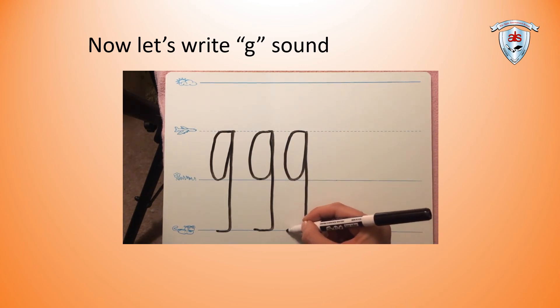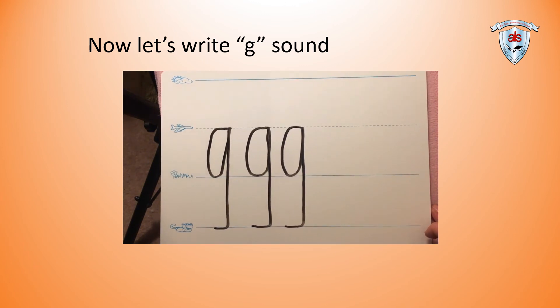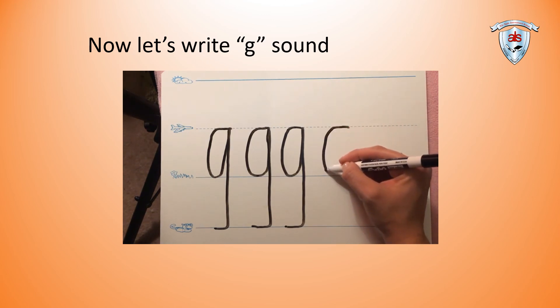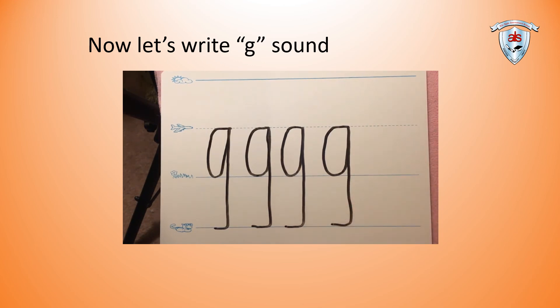I do not pick up my marker when I make the letter G. Start on the plain line, go down and around to the grass line, up to the plain line, and all the way down to the worm line, and make a curve. G, game, G.